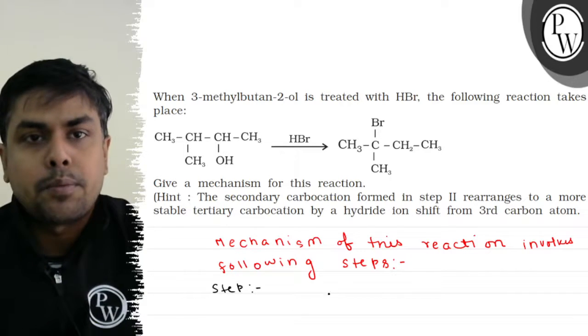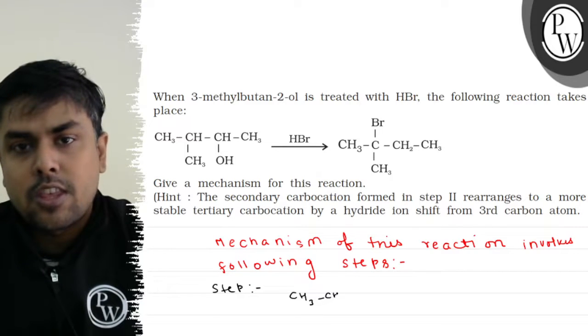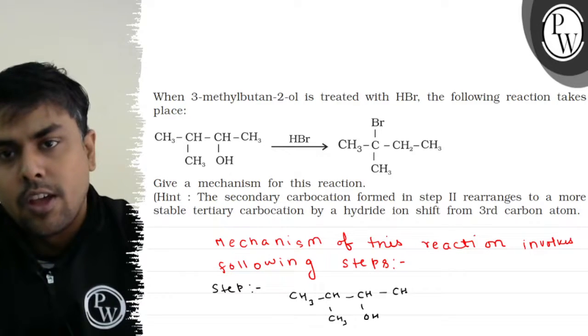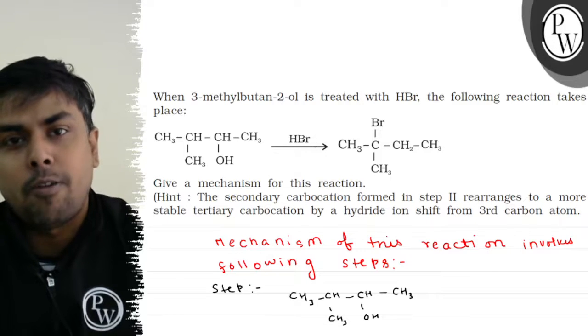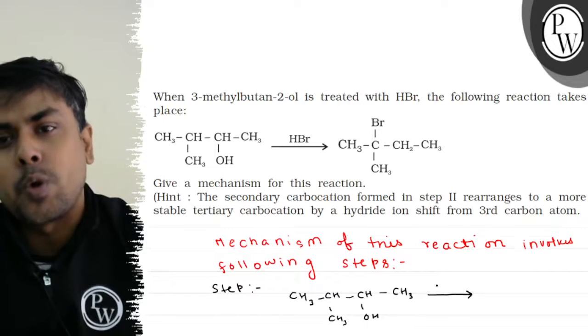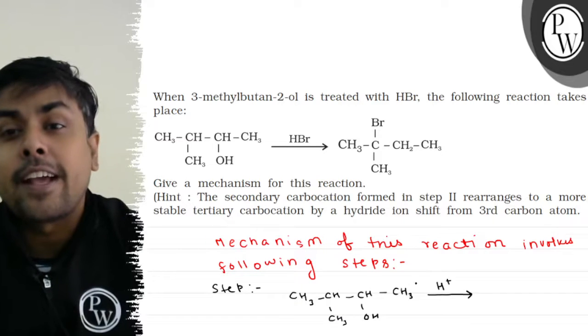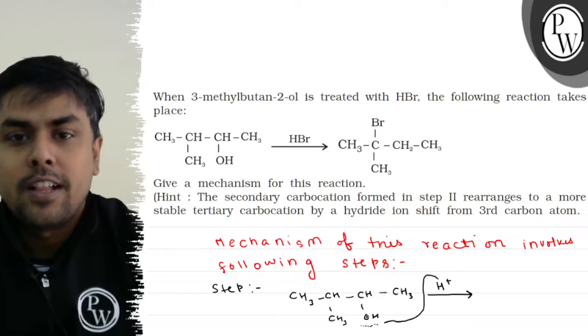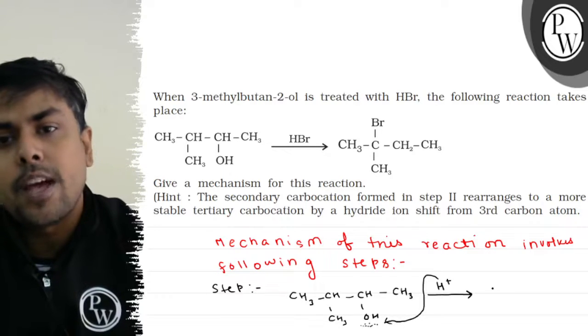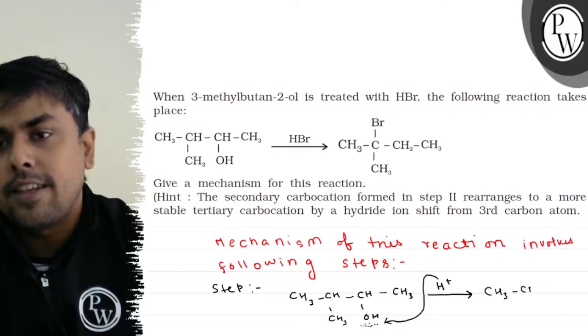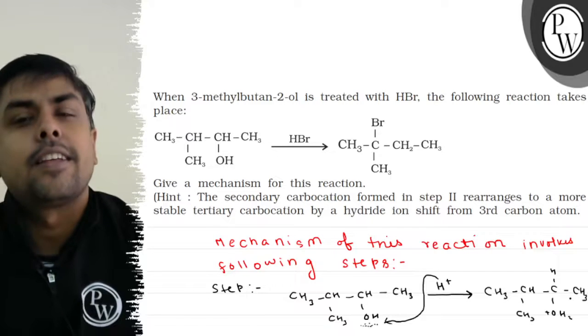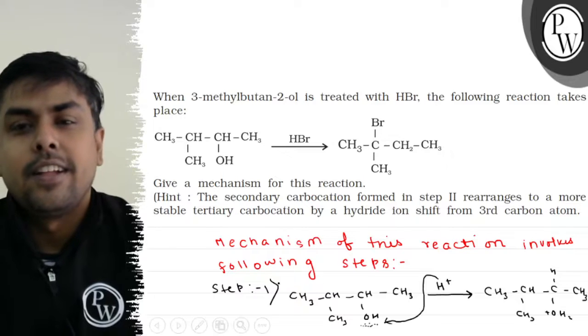The substrate is CH3-CH(OH)-CH(CH3)-CH3. When treated with H+, this forms CH3-CH(OH2+)-CH(CH3)-CH3. This is Step 1 of this reaction. Let's talk about the other steps.